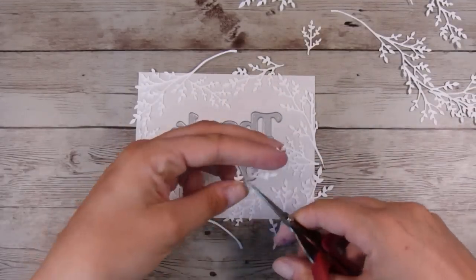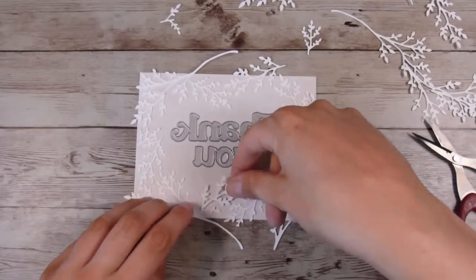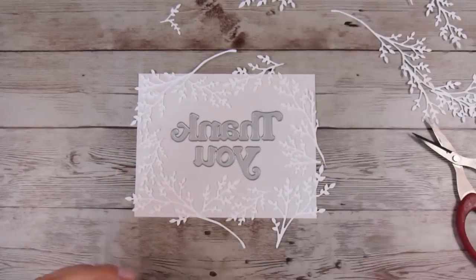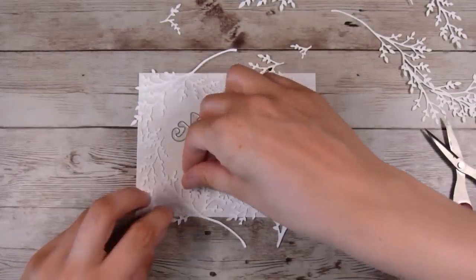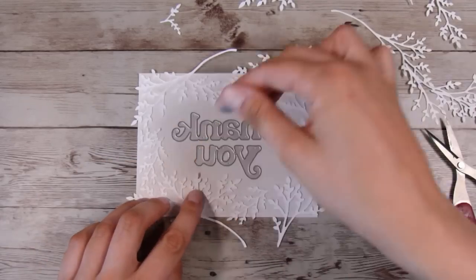It's up to you what you choose. If you're doing bigger elements like flowers and leaves like I did in the last one, it's really easy to pop some foam tape behind them, but not so much with this really fine foliage.